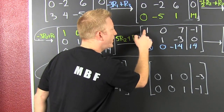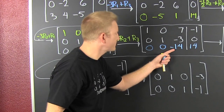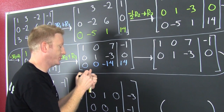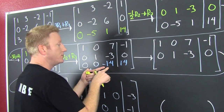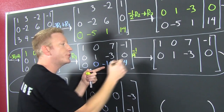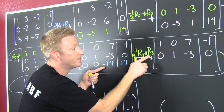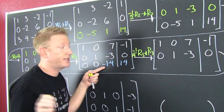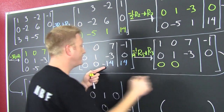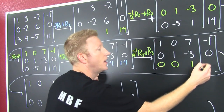We got a 1 there and killed the column; we got a 1 there and killed the column. Now we need to get a 1 right down in row 3, column 3. How am I going to make minus 14 a 1? Multiplicative inverse — minus 1/14th times row 3, put back in row 3. The only row that's changing is row 3, so I recopy the other two. 0, 0, and this is 1 — the desired effect. 14 divided by minus 14 is minus 1.